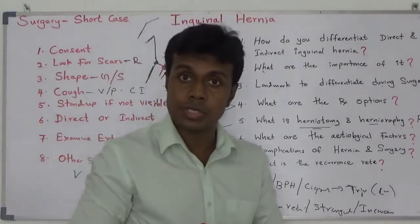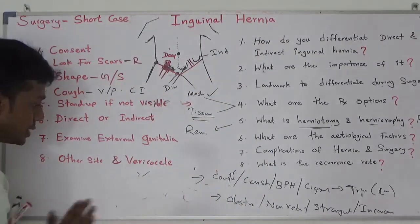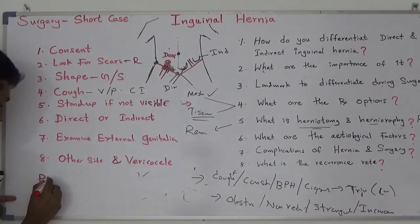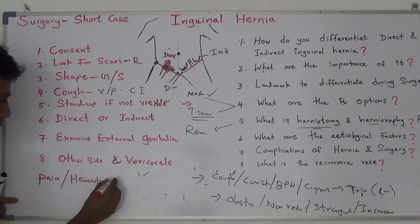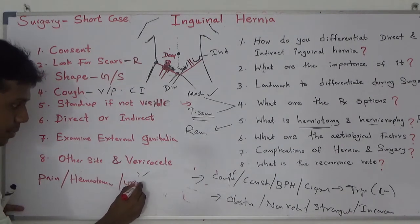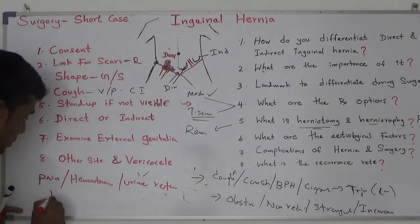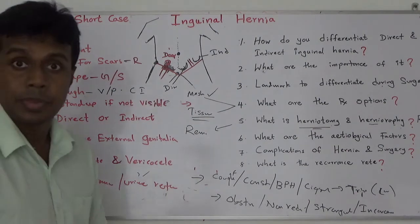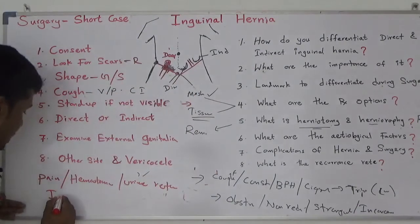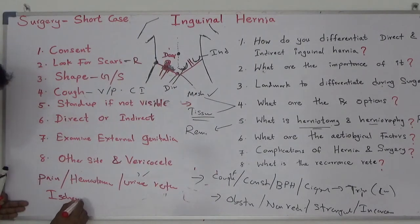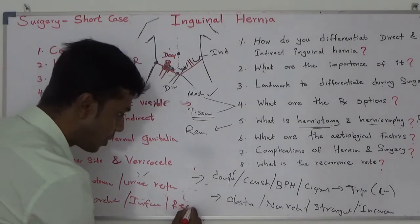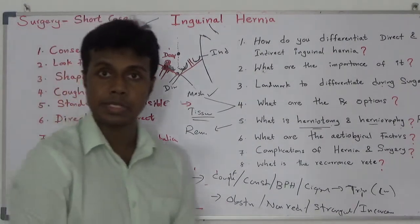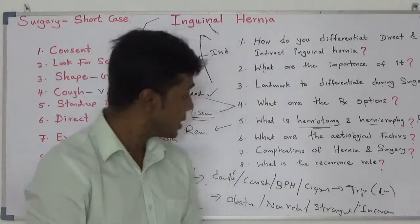What are the complications of surgery? Your patient can develop pain following surgery, hematoma, inflammation, urine retention. Sometimes the spermatic cord and vessels can be damaged, leading to ischemic orchitis. Infection and recurrence are also possible complications.